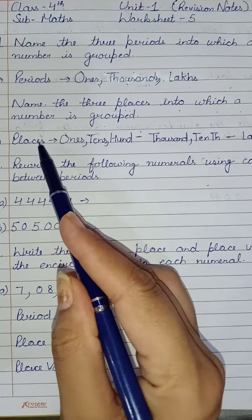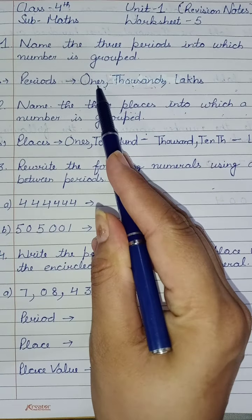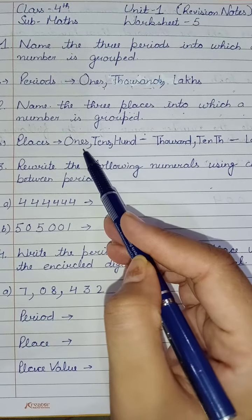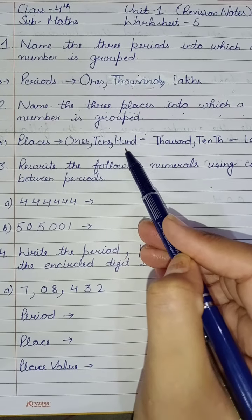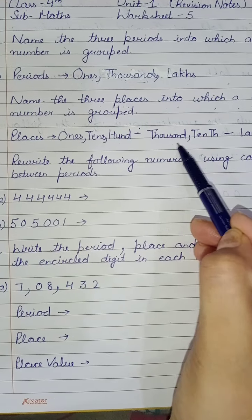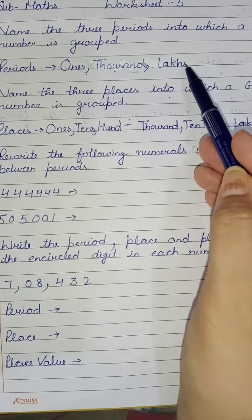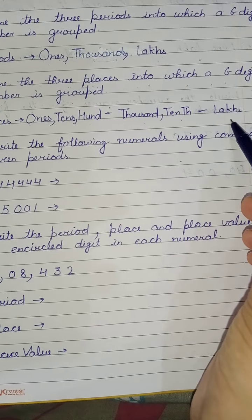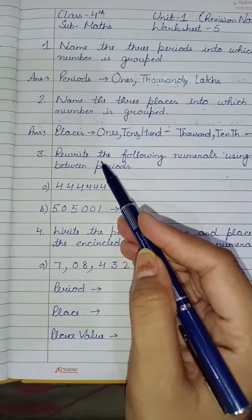The places are: ones, tens, hundreds for the ones period; thousands, ten thousands for the thousands period; and lakhs for the lakh period. Remember the difference between periods and places.